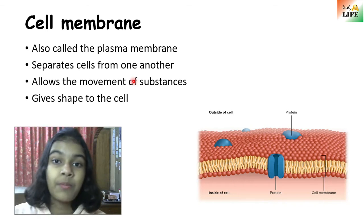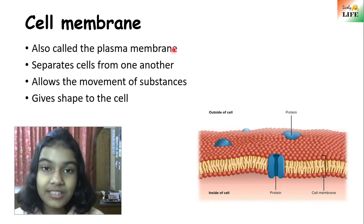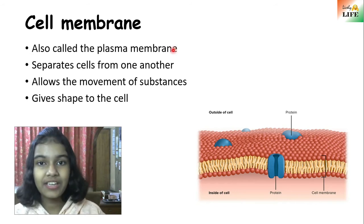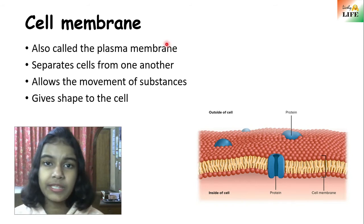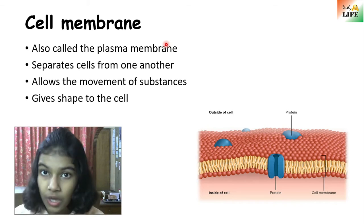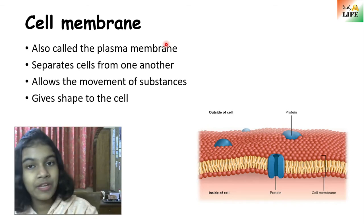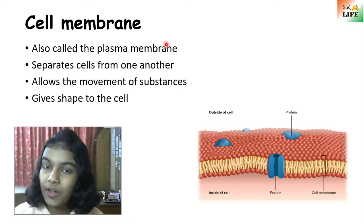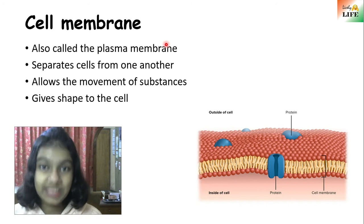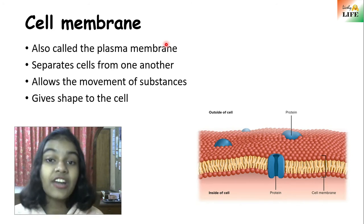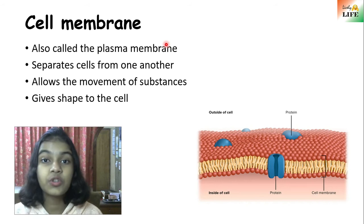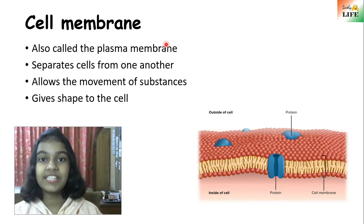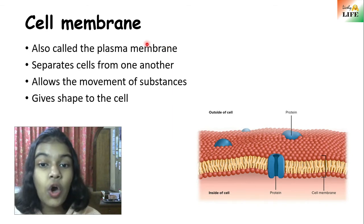If the cell membrane were not there, all the organelles from two different cells would get mixed up. So the cell membrane separates one cell from another. It's similar to a building where all the rooms are separated by walls — the kitchen is separated from the bedroom by a wall. Similarly, the cell membrane acts as a separation between two different cells and also protects the cell from the outside environment.